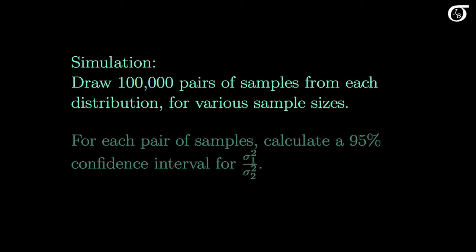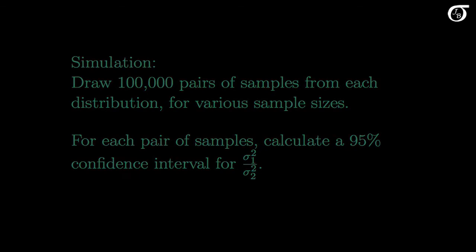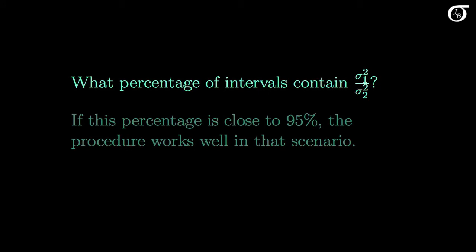In this simulation I'm going to draw 100,000 pairs of samples from each of those four different distribution shapes, for various sample sizes. For each pair of samples I'm going to calculate a 95% confidence interval for the ratio of population variances. Then we'll look at what percentage of intervals actually contains the ratio of population variances. If the percentage is close to 95%, the procedure works well; if it is far different from 95%, the procedure is not working well, and our reported results may be misleading.